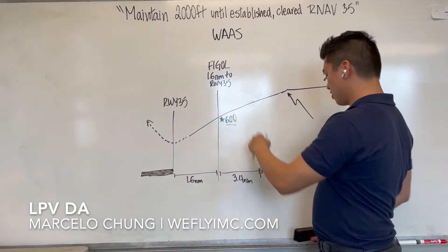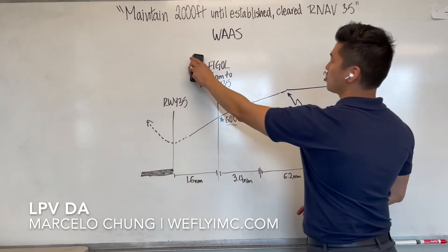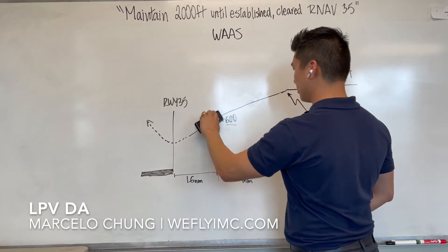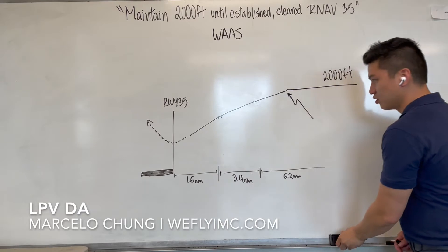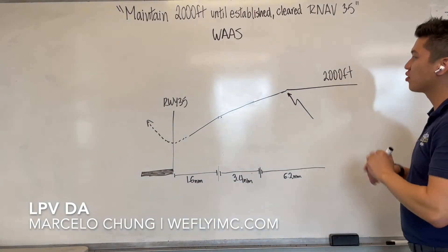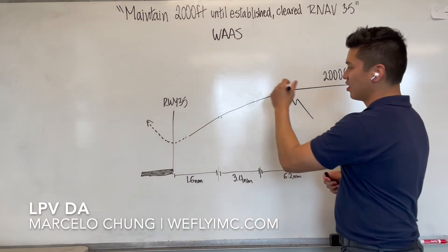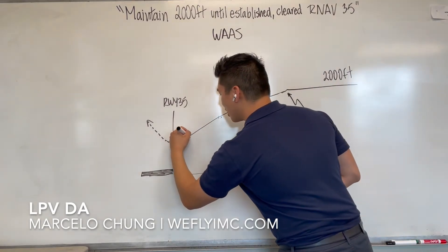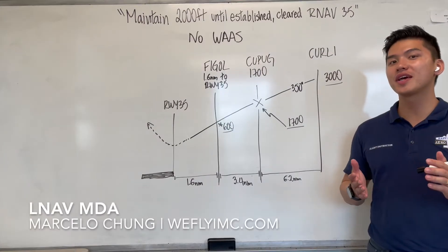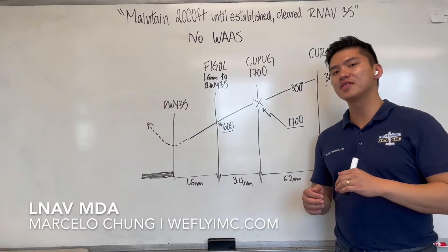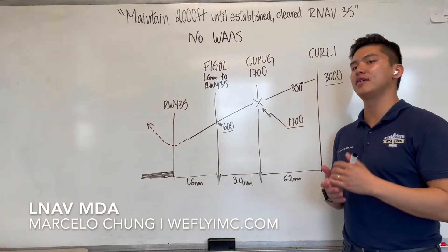The star fix, Figo, is for LNAV approaches only, so you can disregard that as well. When you're flying this approach and your GPS has WAAS, all you care about is the glide slope intercept at 2,000 feet, and you follow that all the way down to your LPV DA minimum. If your GPS does not have WAAS, you're going to fly this approach down to your LNAV MDA minimums.